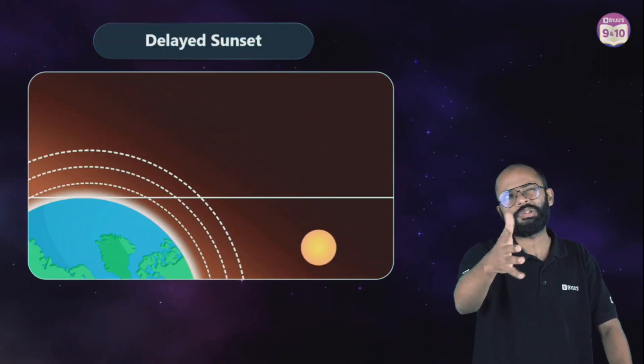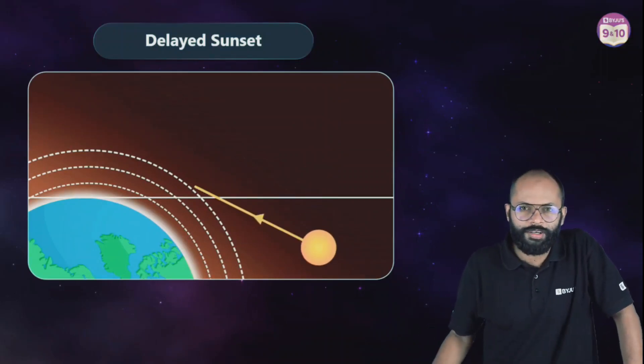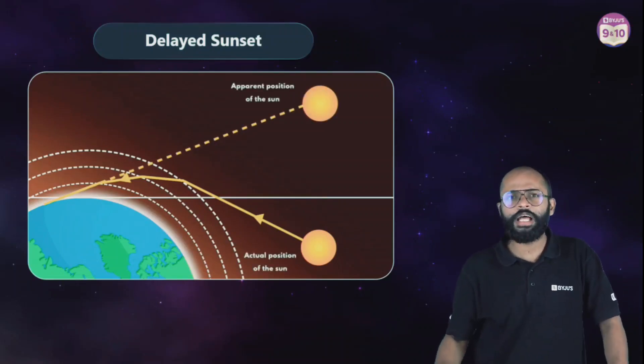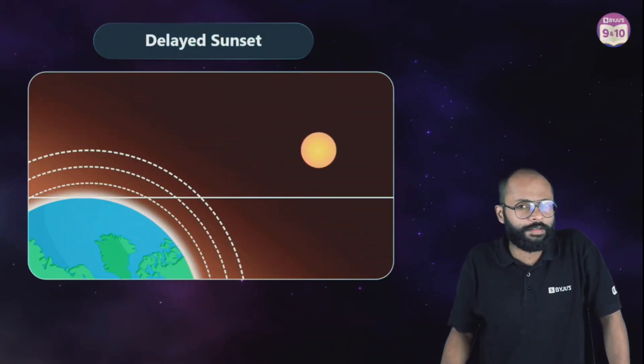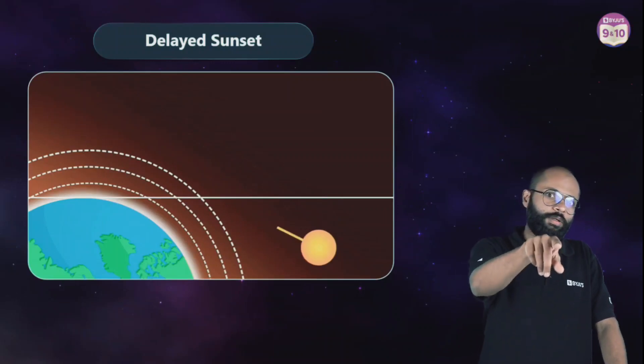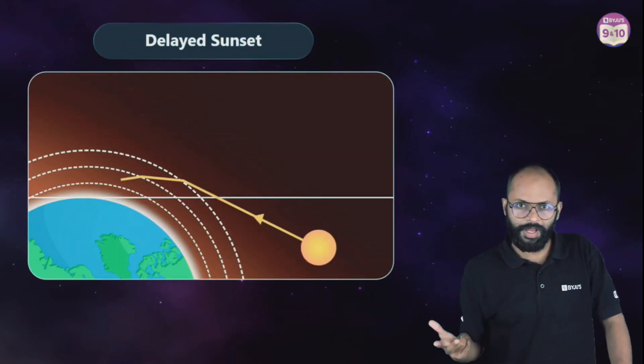So you understand now why we see an advance sunrise and delayed sunset? You understand now why stars twinkle and planets don't? Why stars look smaller even if we know they are bigger than the planets? That's a homework question for you and I want the answer in the comment section.